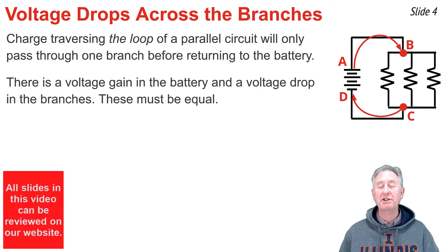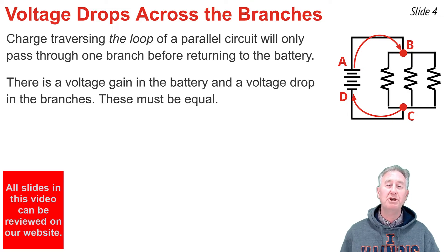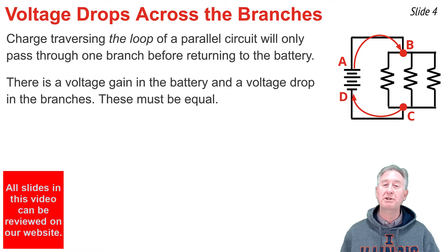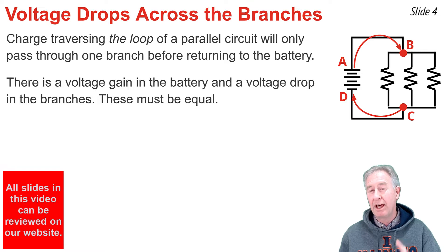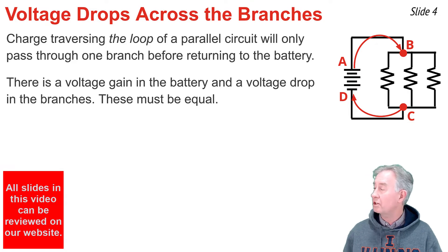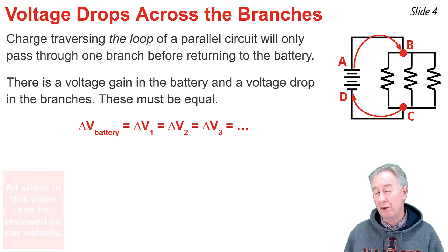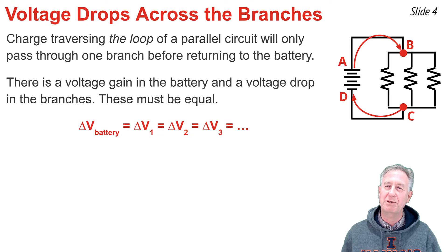As in any circuit, charge that passes through the battery of a parallel circuit will undergo a gain in electric potential, and as it passes through one of the resistors, it will undergo a loss in electric potential — a voltage drop. For the circuits shown here, charge moving from location B to C will undergo a voltage drop, and charge moving from D to A will undergo the voltage gain. Since charge will only pass through one of these three resistors, there's only one voltage drop. Thus, the volts lost going from B to C must equal the gain from D to A. We express this as: ΔV_battery = ΔV₁ = ΔV₂ = ΔV₃.